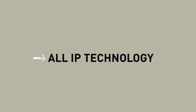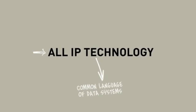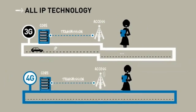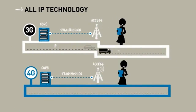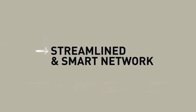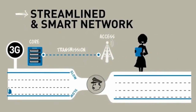Also, 4G uses all-IP technology — this is the common language of data systems. A 3G network uses different languages to transport data over the network to the customer. A 4G network uses only one single language to transport data: all-IP.